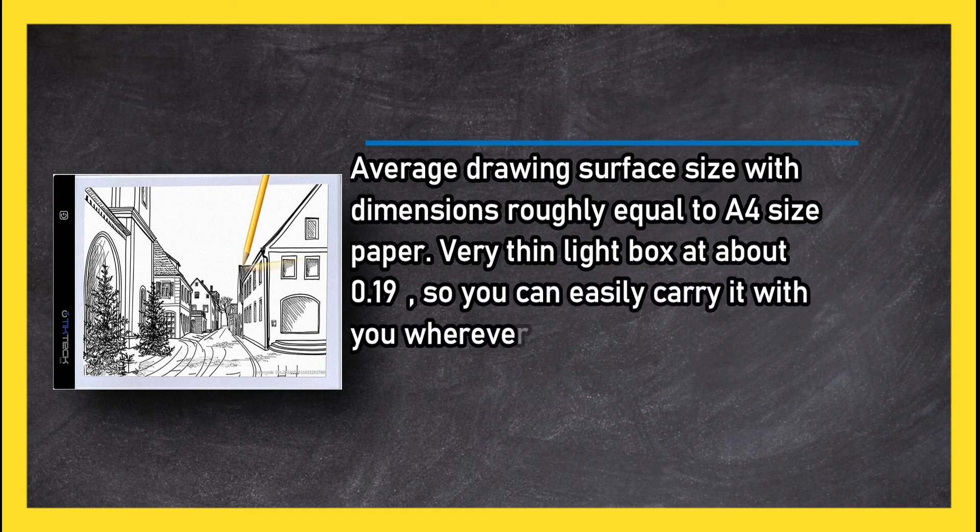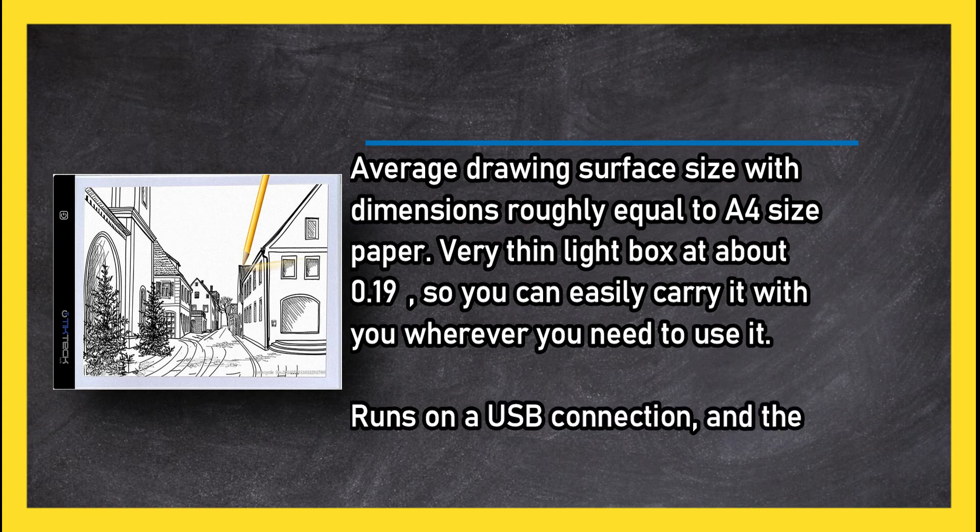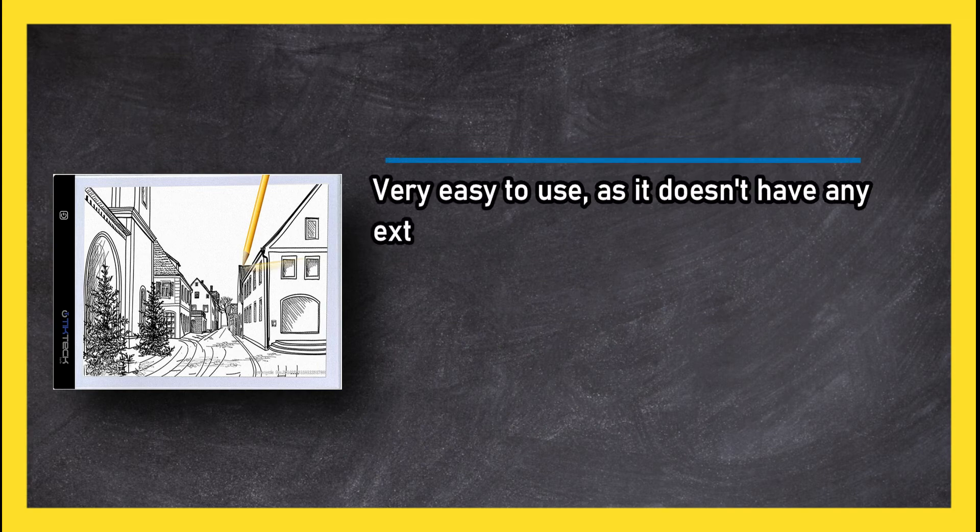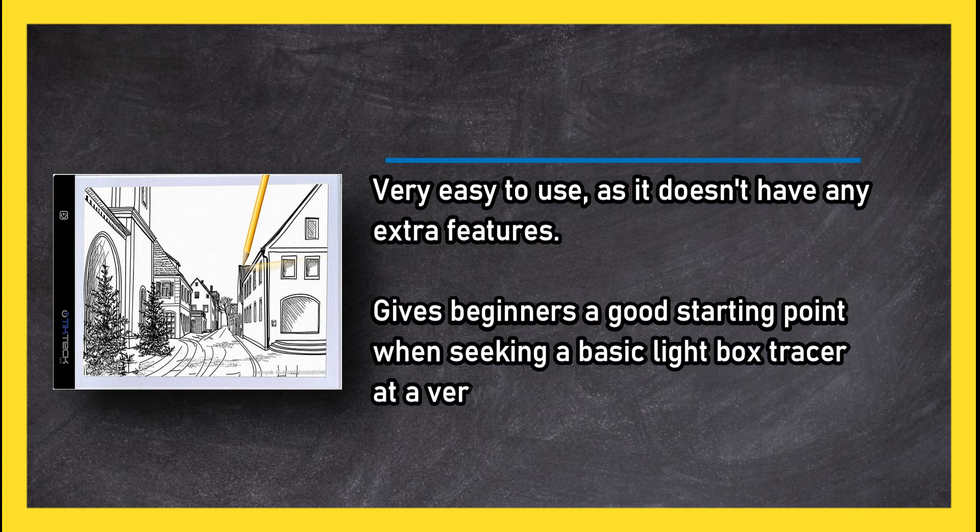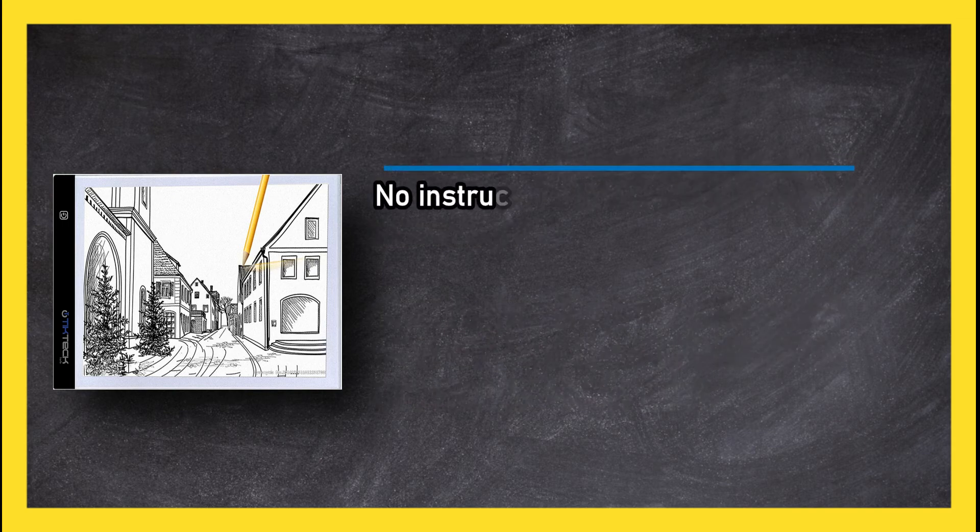Runs on USB connection and the cord is included. Very easy to use as it doesn't have any extra features. Gives beginners a good starting point when seeking a basic light box tracer at a very reasonable price. No instructions. Uses a diffusing layer that may dim the light too much for some applications.